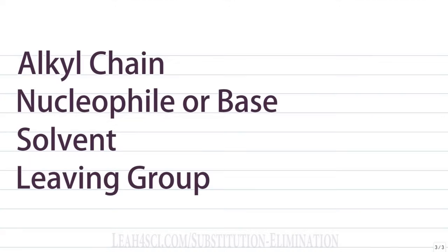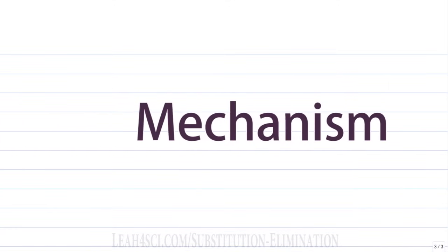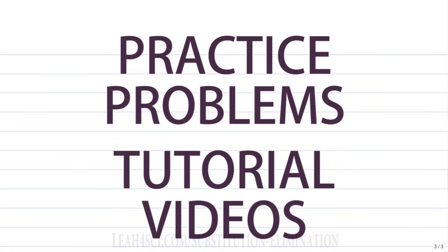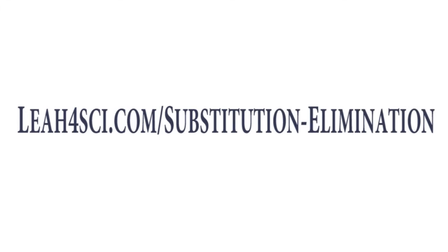The series starts with those criteria, then follows up with a step-by-step breakdown of the reaction mechanism, intermediates, and everything you need to know, along with practice problems and tutorial videos showing you how to choose between SN1, SN2, E1, or E2. You can find all of this at leah4sci.com/substitution-elimination. I also have a substitution elimination mini bootcamp — a thorough, in-depth crash course — with details available when you download the solutions to the substitution elimination quiz.